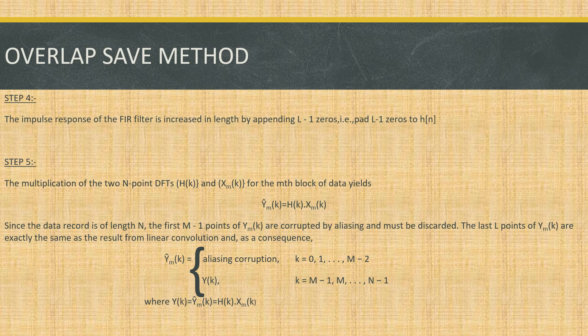In step 4, we increase the length of our impulse response h(n) by zero padding — we add L-1 zeros to it. In step 5, we multiply the two N-point DFTs H(k) and X(k) to yield Y(k), given as Y(k) = H(k) · Xm(k). The data block has M-1 points of the previous data followed by L points of new data.